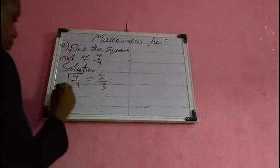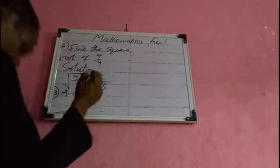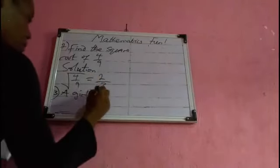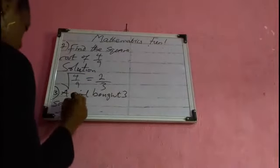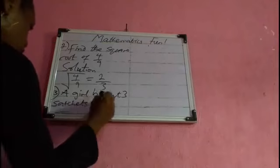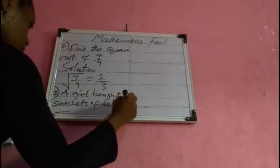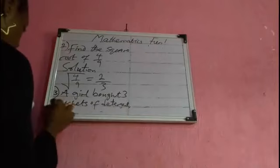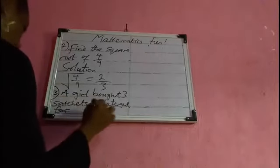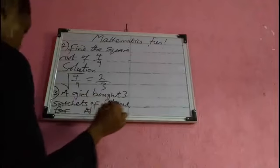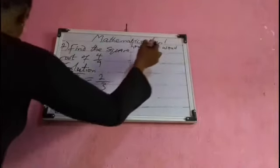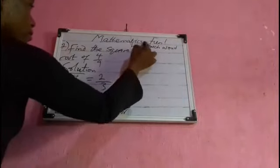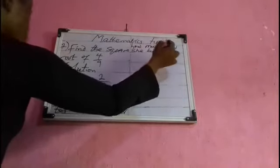Number three: a girl bought three sachets of detergent for 120 naira. For how much would she buy 20 sachets?